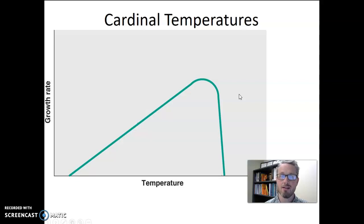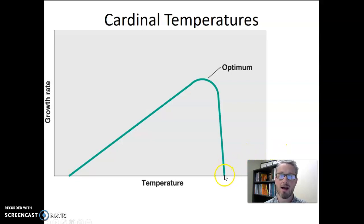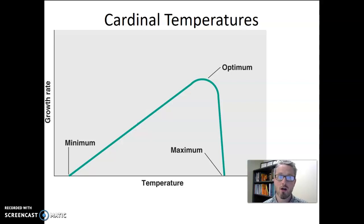Using that graph, we can identify these cardinal temperatures. The first is the temperature the bacteria grows the absolute best at — we call that the optimum temperature. Next is the highest temperature at which the bacteria can grow at all; at this temperature there's a little bit of growth, and any hotter than that the microbe is incapable of growing — we call that the maximum. On the left-hand side, we identify the lowest temperature at which we can detect any growth; colder than that there's no growth — we call that the minimum.